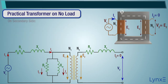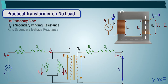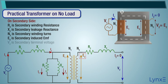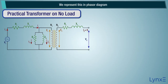On the secondary side: R2 is secondary winding resistance, X2 is secondary leakage reactance, N2 is secondary winding turns, E2 is secondary induced EMF, V2 is secondary terminal voltage. We represent this in a phasor diagram.